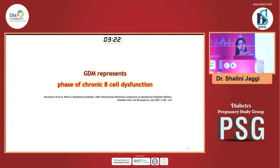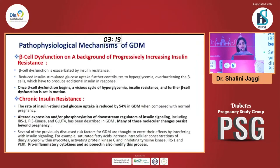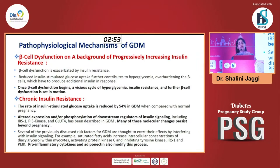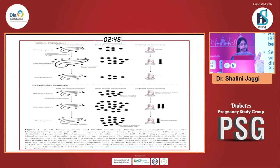GDM occurs because there is a phase of chronic beta cell dysfunction — it is a stage in the evolution of type 2 diabetes. There are multiple mechanisms and pathways. There is already a background of chronic insulin resistance in the body which reduces glucose uptake by almost 54% in GDM. There is a lot of expression and phosphorylation of downstream regulators of insulin signaling. On this background, the progressive increase in insulin resistance in pregnancy occurs, and there is a beta cell decompensation.